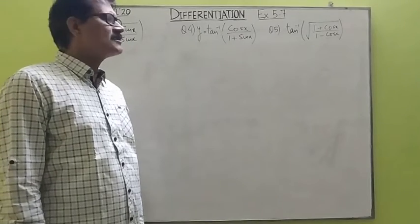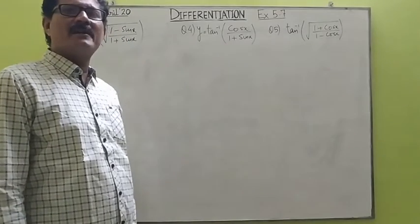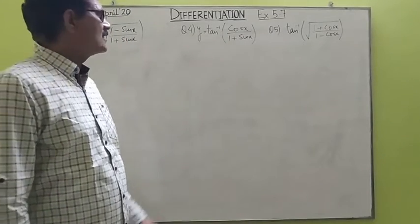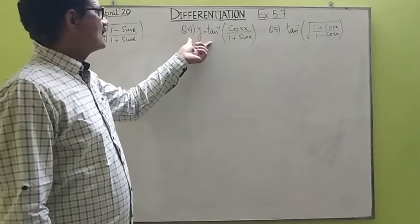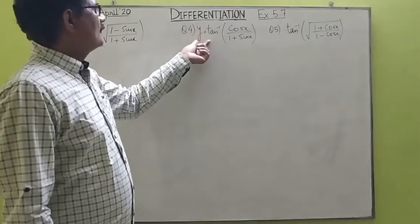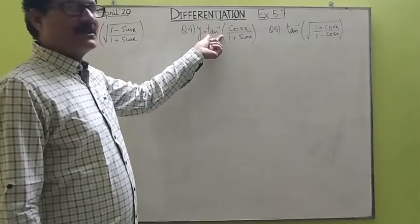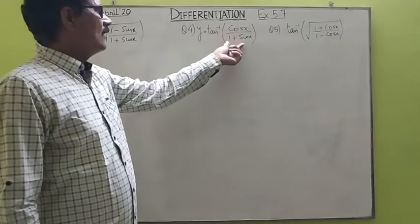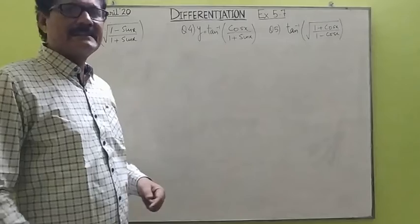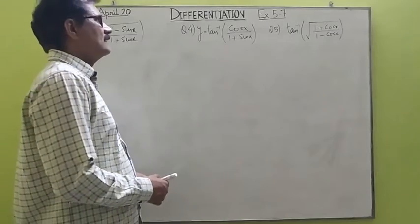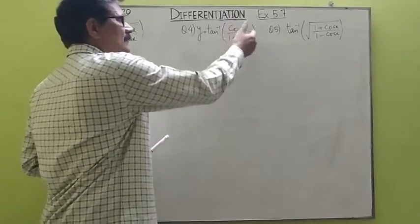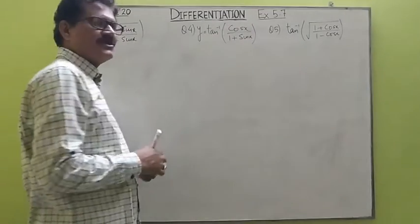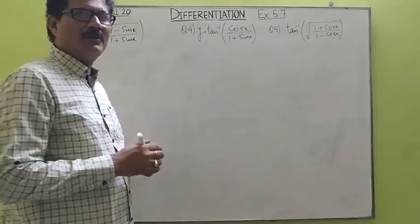Let's do some more questions on inverse trigonometrical functions, derivatives of functions now. We have y equals tan inverse of cos x upon 1 plus sin x. Now for this derivative, we have to express this expression in its simplest form.